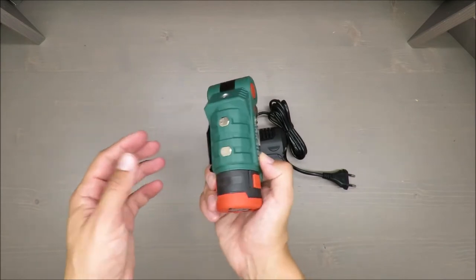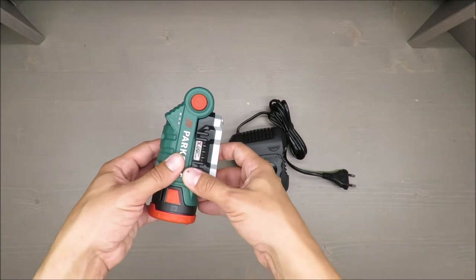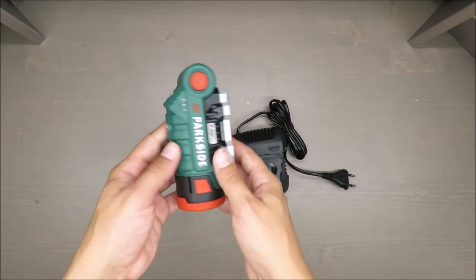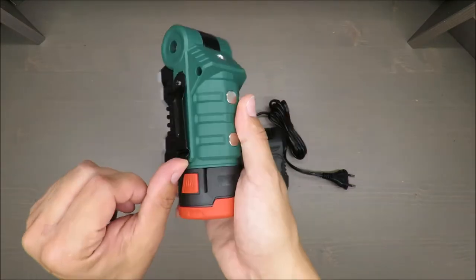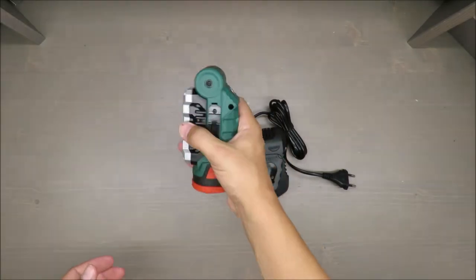You can attach it to your trousers or belt with this hook, so it's quite compact. The height is about 15 centimeters and the cross-section is almost like a 12-volt battery.